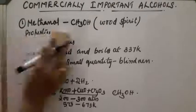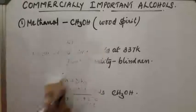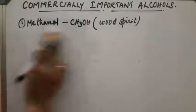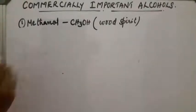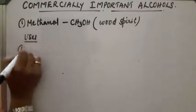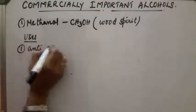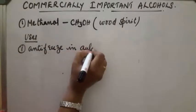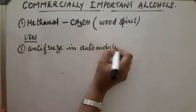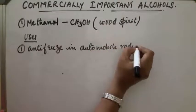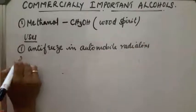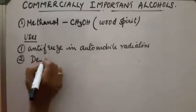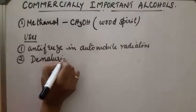Uses of methanol: first, it is used as an antifreeze in automobile radiators. Second, it is used in denaturing ethanol — that is, to make ethanol unfit for drinking.